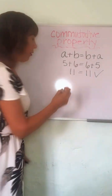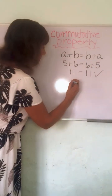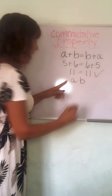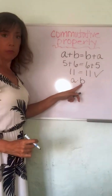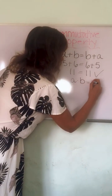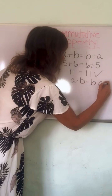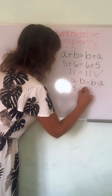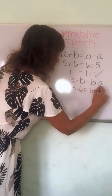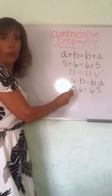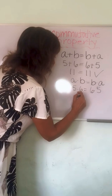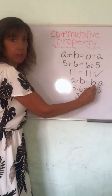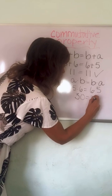Now we can say the same thing with multiplication. A times B equals B times A. So 5 times 6 equals 6 times 5. What is 5 times 6? 30, and 6 times 5 is 30.